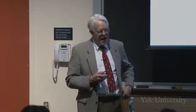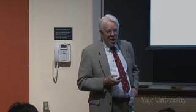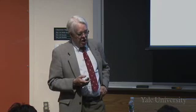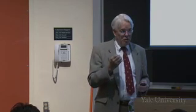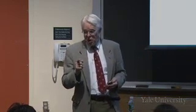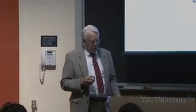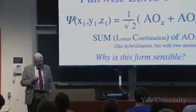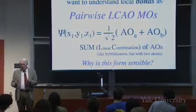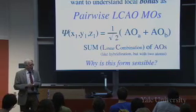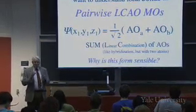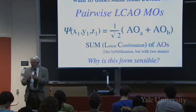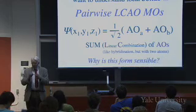An LCAO is a sum—a weighted sum—a linear combination of atomic orbitals. Here's an example: ψ, which is a function of the position of one electron (x₁, y₁, z₁), equals one over the square root of two times one atomic orbital plus another. Have you seen adding orbitals like that before? That's what hybridization is—we added s and p. But this is different: when we added s and p before, they were on the same nucleus. Now we're adding orbitals on different nuclei, nucleus A and nucleus B.